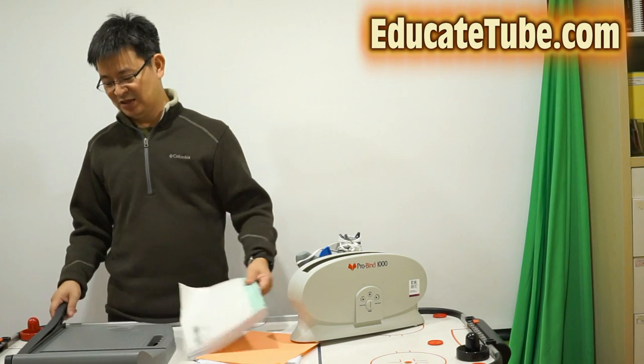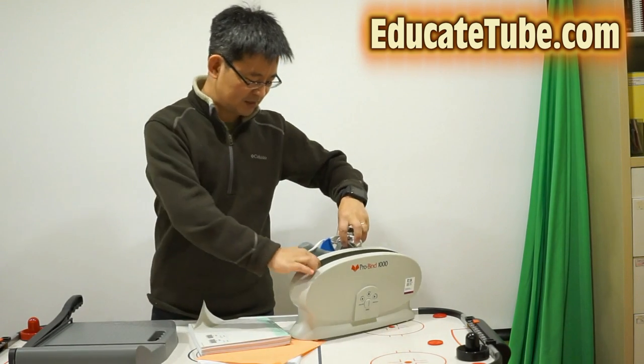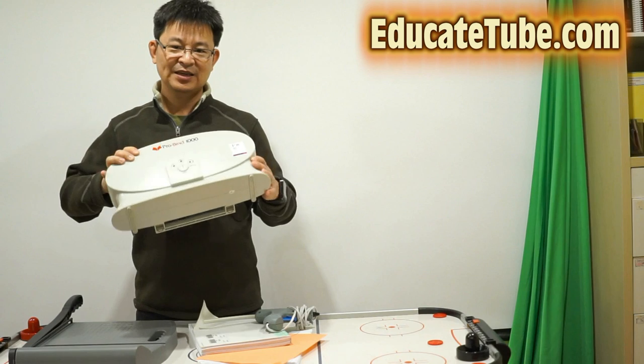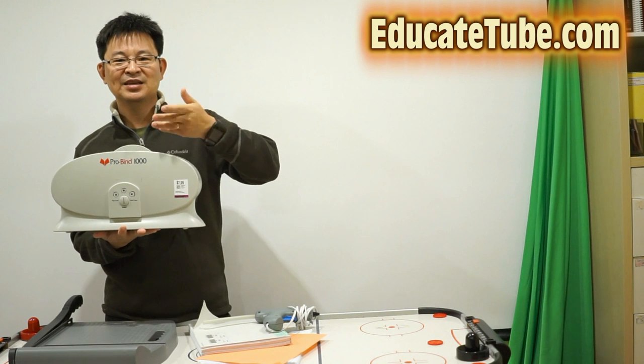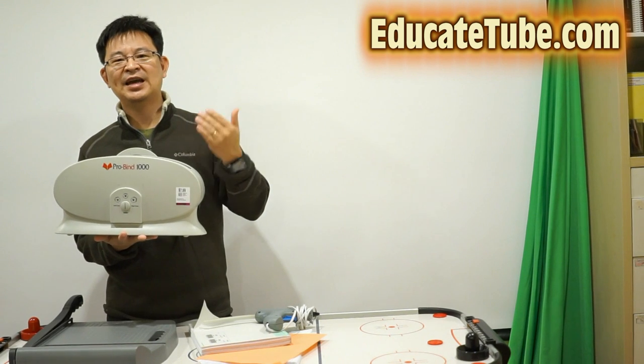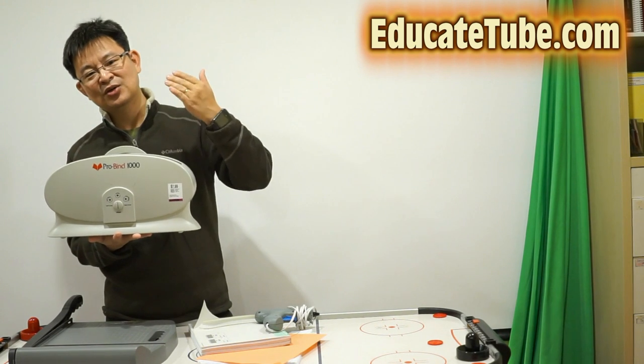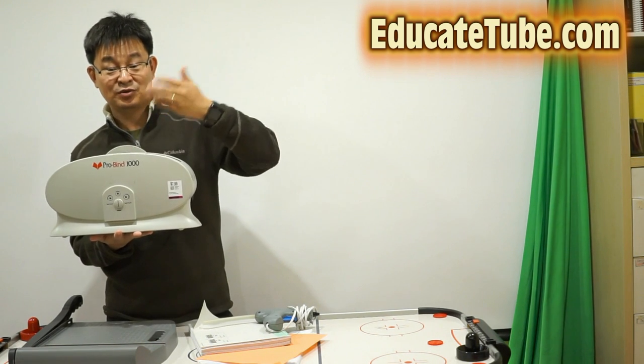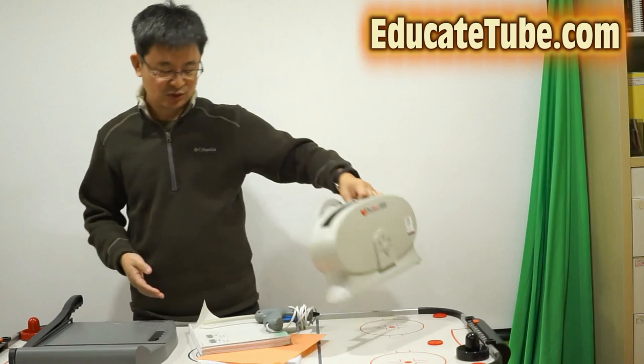Okay, what you need of course is a paper trimmer. You need, this is the most important actually, you need this Pro Binding 1000. Now, the Pro 1000 has its own binding paper that you can get. But the thing is, those are very expensive and you don't need that. I'm going to show you how you can go without those special type of paper that comes with, that you have to buy for this type of Pro binding machine.